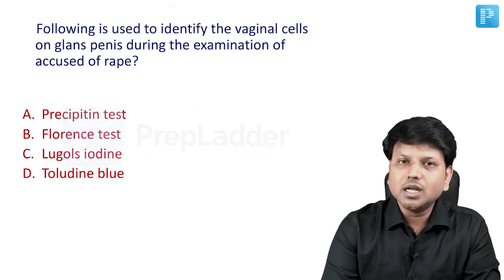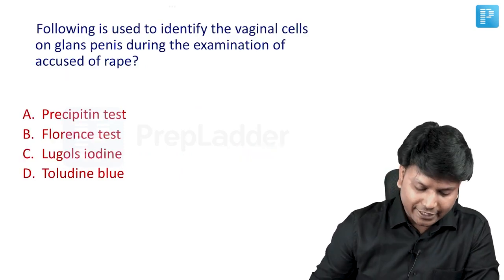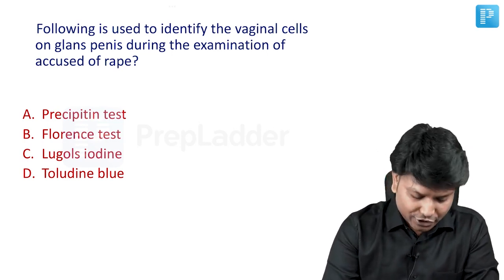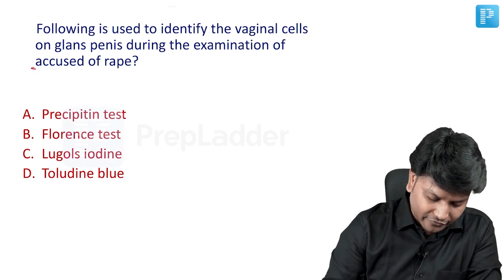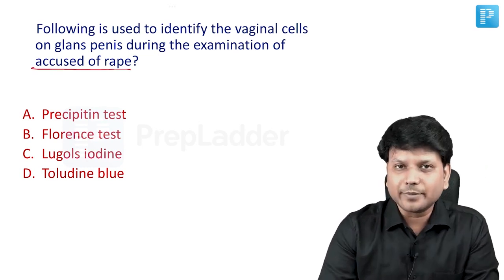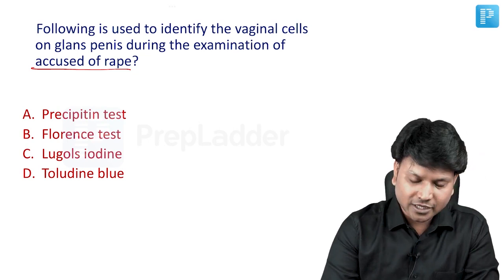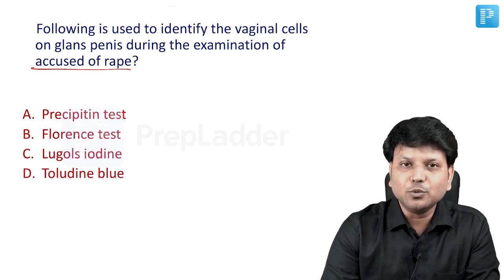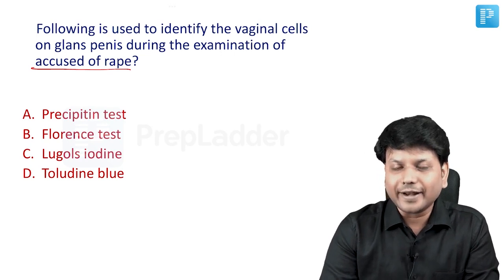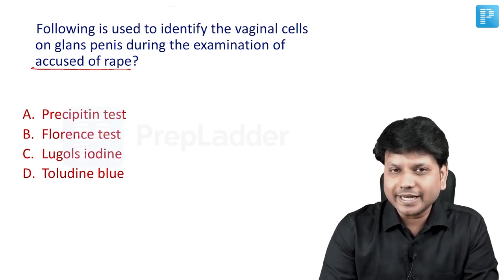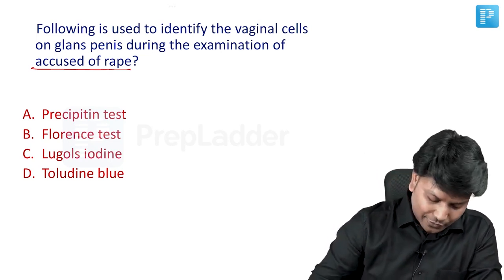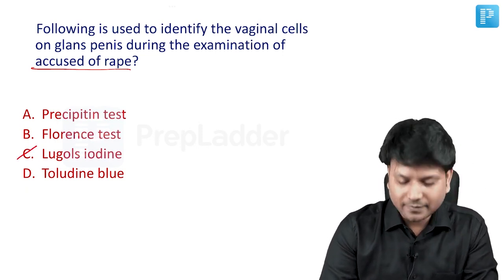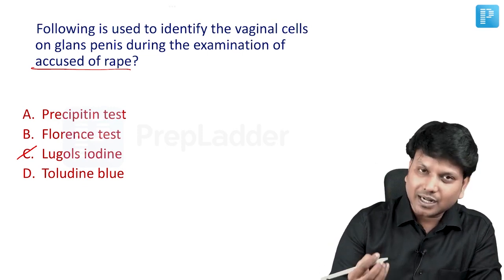The next question: which test is used to identify vaginal cells on the glans penis during examination of an accused in a case of rape? Options include precipitin test, Florence test, lugalcidin test, and toluidine blue test. The answer is very simple — it is the lugalcidin test. This is a repeat question.